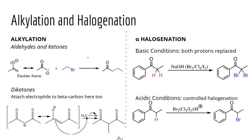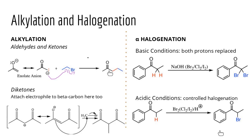Enolate ions can be used as great nucleophiles for alkylation. We create a strong enolate nucleophile and then perform an SN2 reaction — the nucleophile attacks and kicks off the bromine (leaving group), forming a new carbon-carbon bond. This allows us to alkylate at the alpha carbon.